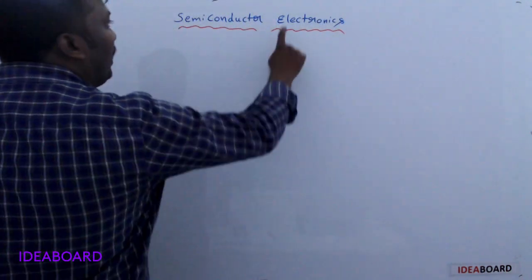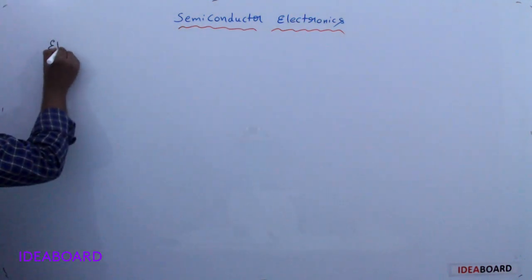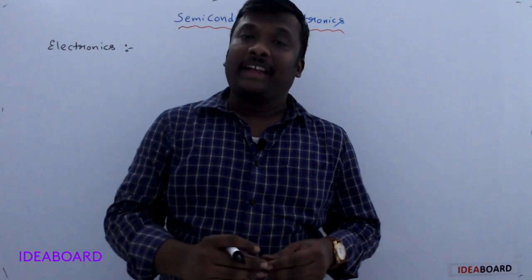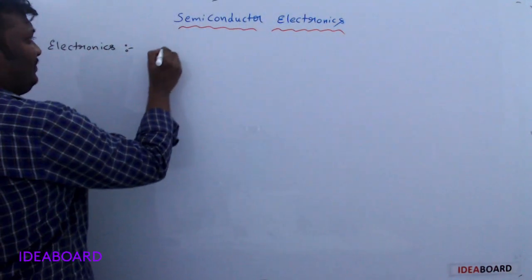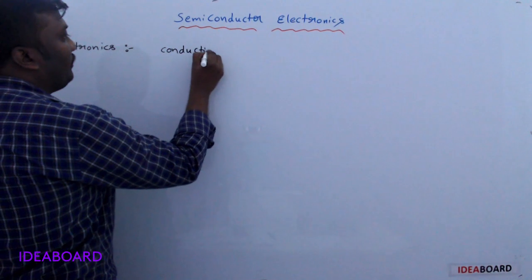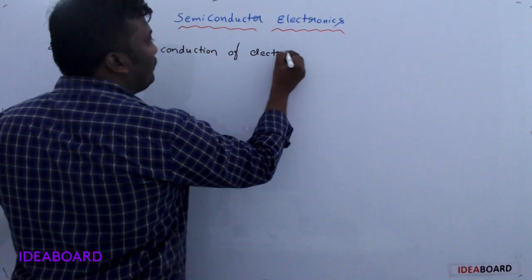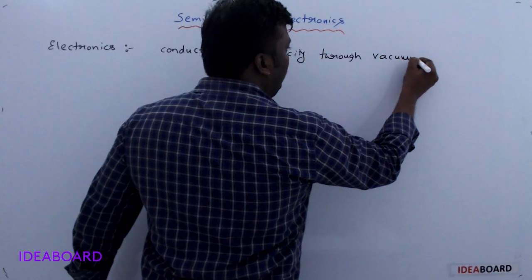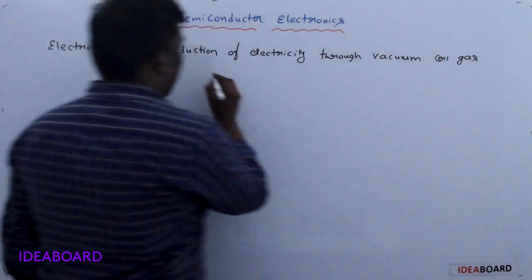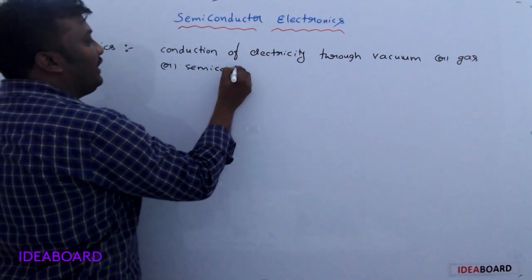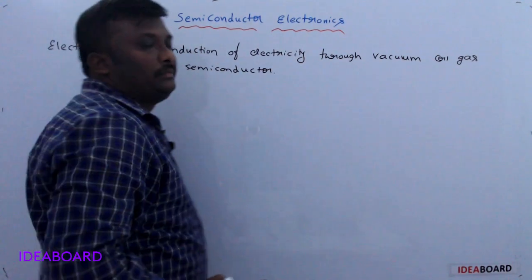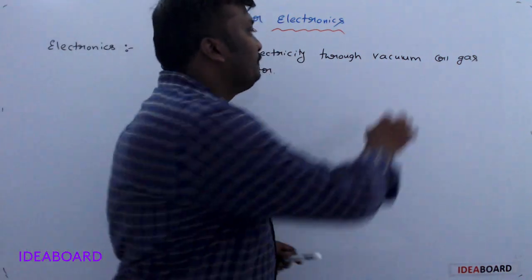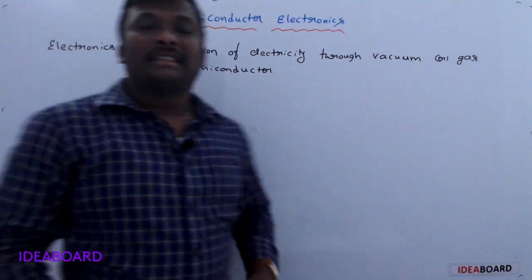First of all, we would like to know about what is electronics. Electronics is a branch of physics which deals with the conduction of electricity through vacuum, gas, or semiconductors.